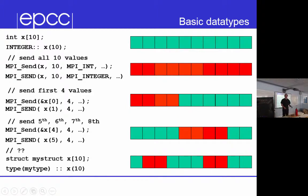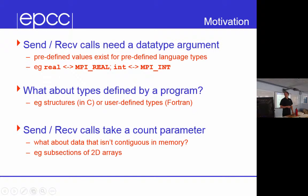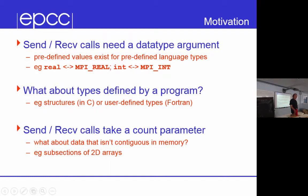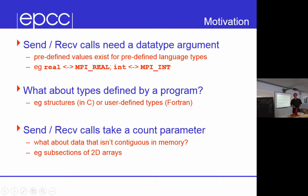To send data where you've defined your own type, you need to create MPI structures corresponding to your structure, and vectors which correspond to strided patterns. Send and receive calls need a data type argument, and for predefined language types there are predefined values — MPI_REAL, MPI_INT. But what about types defined by a program — structures in C or user-defined types? If MPI were a compiler it would be fine, because the compiler would look at your structure definition. But MPI is a bunch of library routines, so if you create a structure you unfortunately have to define it twice: once in your code as normal, then you have to tell MPI what it looks like. It's a pain, but there is no other way.